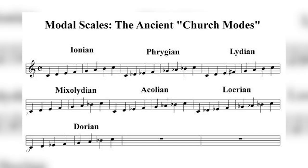We won't spend too much time on modal music, but the gist is this: in modality there are eight scales called modes, each with their own unique pattern of tones and semitones. A tonal scale like C major or D major always has the same pattern of tones and semitones and always sounds the same, but every single mode sounds a little different because it has a different pattern.